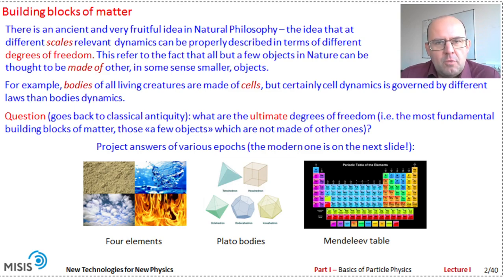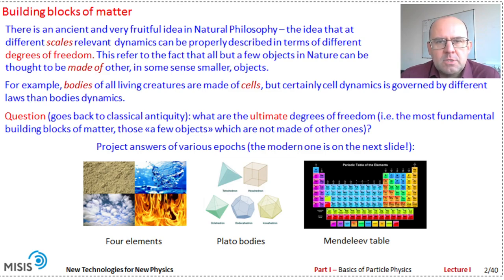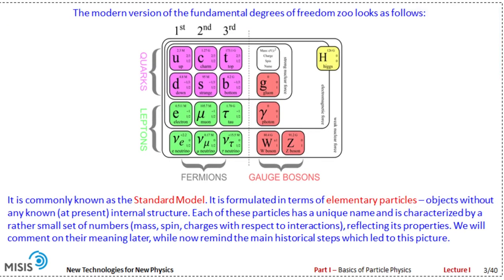A very important step was done by Mendeleev when he invented his periodic table. At the time of Mendeleev, all atoms were considered as elementary — about 18 of them were known. The modern version of the fundamental degrees of freedom looks like the Standard Model. According to the Standard Model, the world consists of particles of two kinds — fermions and bosons — and fermions are further divided into two groups: quarks and leptons.